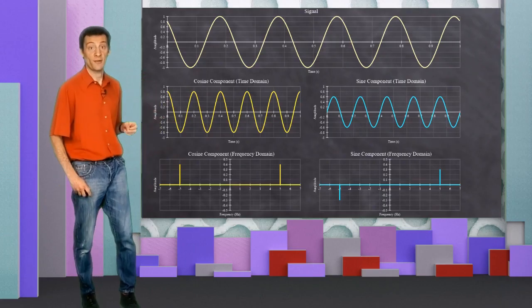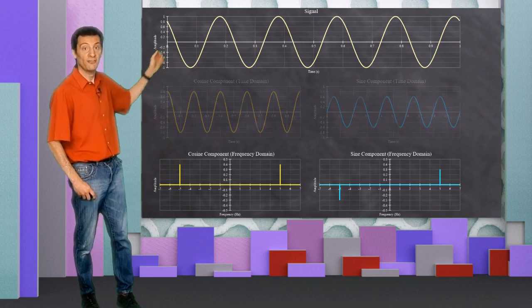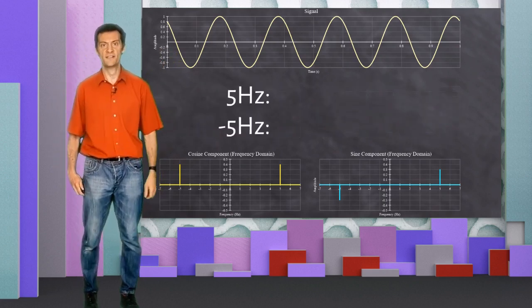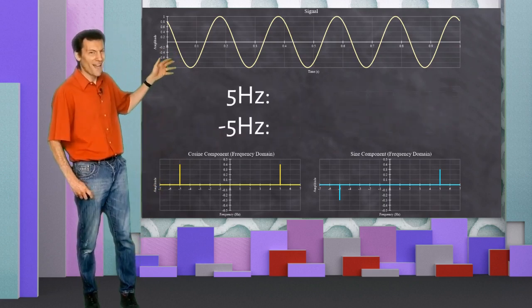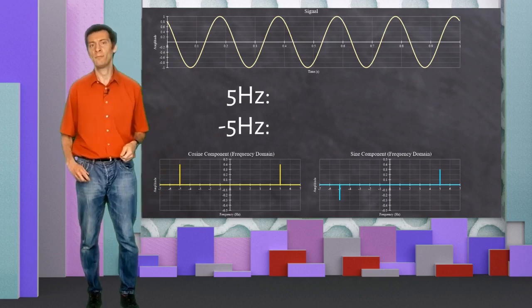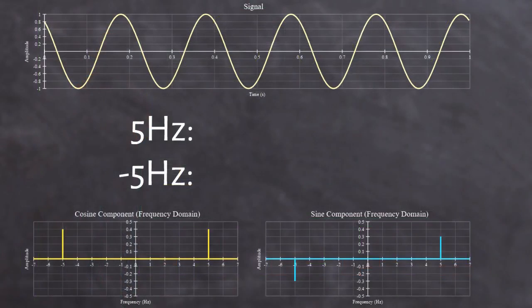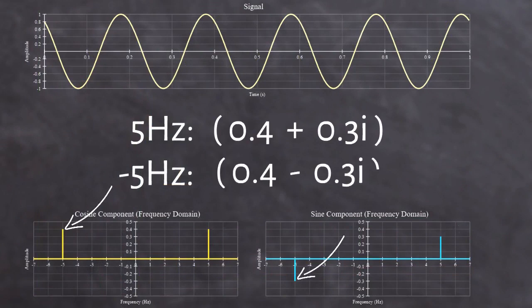There are two non-zero frequencies in this signal, 5 Hz and minus 5 Hz. So this signal could actually be represented by just two complex numbers. 0.4 plus 0.3i for the 5 Hz frequency, and 0.4 minus 0.3i for the minus 5 Hz frequency.